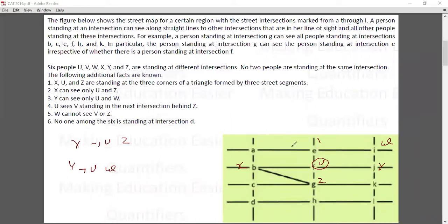Because X cannot see anyone else, so Y and W. U sees V standing in the next intersection behind Z. U sees V standing in the intersection behind Z. So V will come here.